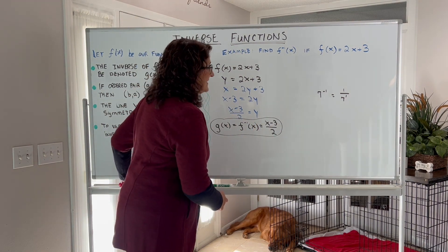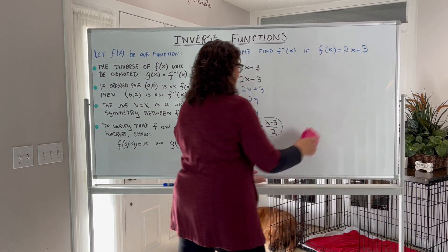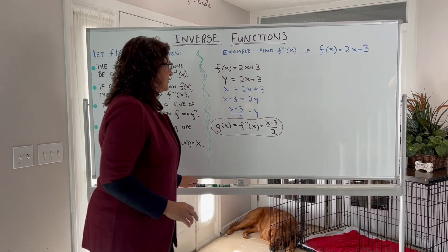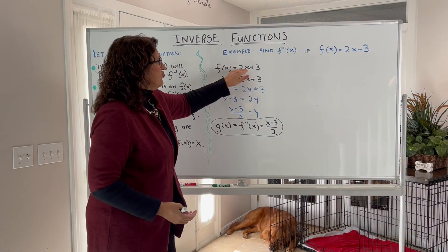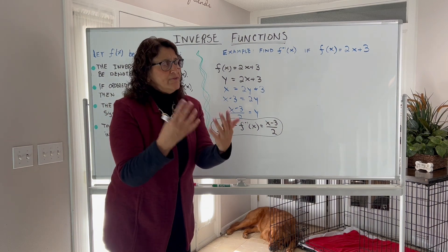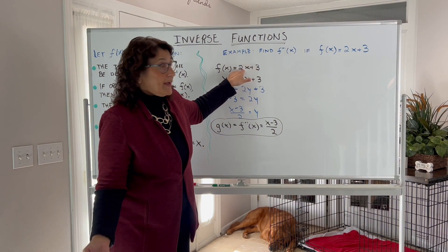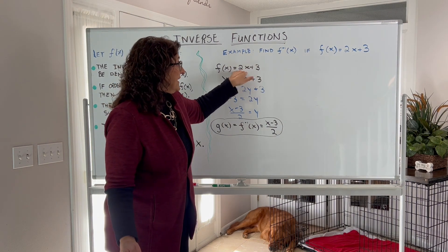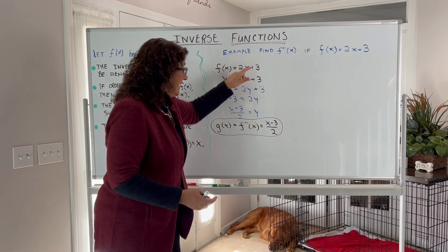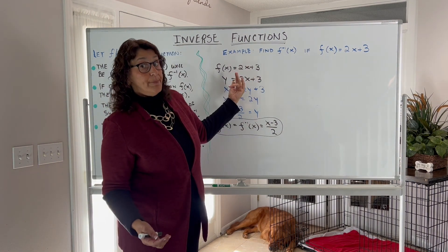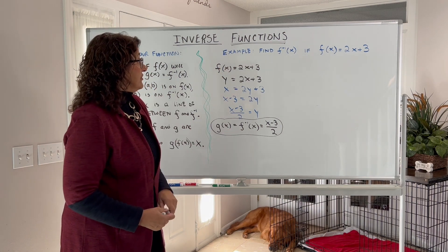When you're finding the inverse of a function, what you're doing is undoing the operations. Our function is 2x plus 3 — we are multiplying x by 2 and adding 3. The inverse undoes that: we take away the 3 and divide by 2. We do the inverse of the operations. That's what inverses are.